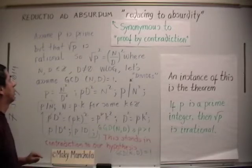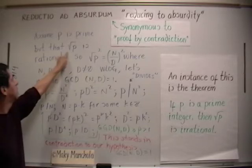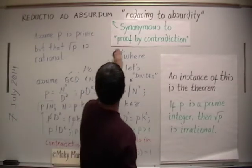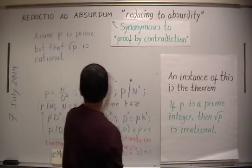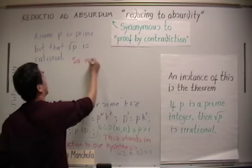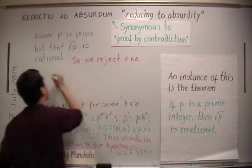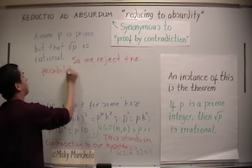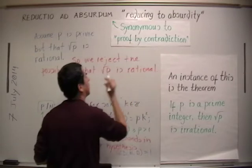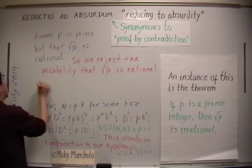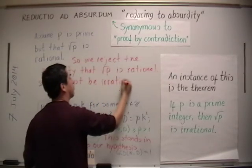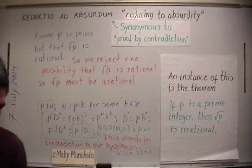So we go back and reject the possibility that the square root of p is rational. Therefore, the square root of p must be irrational. That's all.